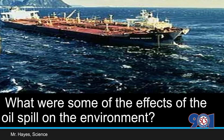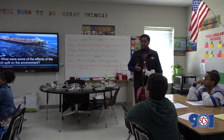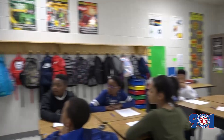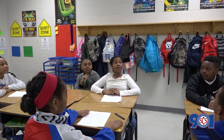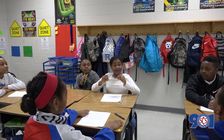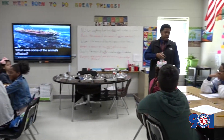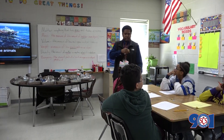What were some of the effects on the environment from the oil spill? Millions of sea life died and it disrupted their ecosystem. So what were some of the animals that were affected? Otters, seals, and birds, and billions of eggs that were planted there.